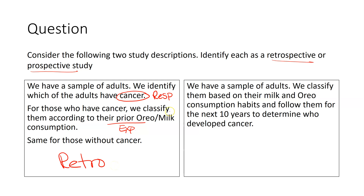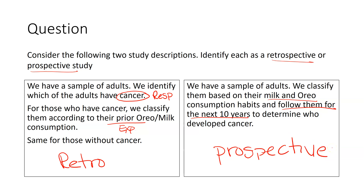The next description says: we have a sample of adults, we classify them based on their milk and Oreo consumption habits, and follow them for the next 10 years to determine who has developed cancer. Following them for a period of time gives away that this is a prospective study. We classify adults based on the explanatory variable first, then see what happens — that's a prospective study.